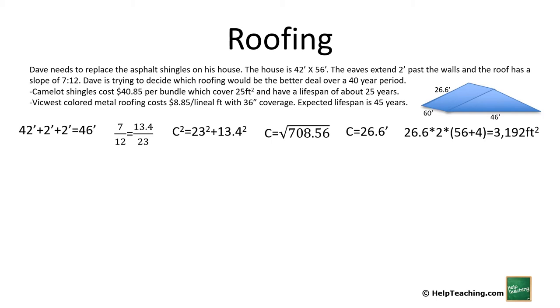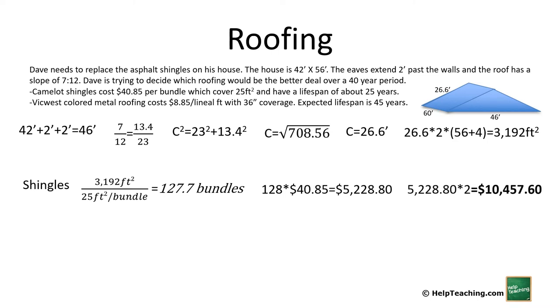So first let's calculate the shingles. So 3,192 square feet for each 45 square foot bundle gives us 127.7 bundles. So we'll round that to 128. Again, this is minimal. You have to have very little waste in order to pull that off. But this will be the minimum times $40.85 for each bundle comes to $5,228.80. But remember, this only lasts for 25 years and he wants to know over a 40-year period. That means we have to replace the roof twice. So $5,228.80 times 2 comes to $10,457.60 for the whole 40-year lifespan.